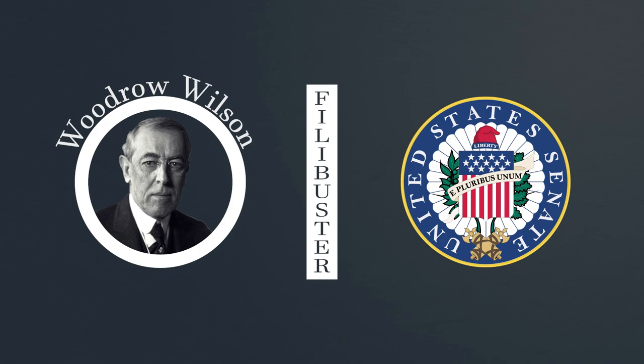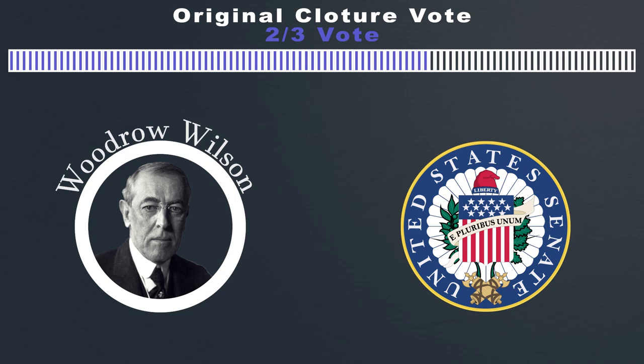Wilson urged the Senate to make a cloture rule, and the Senate did just that. The new rule stated that the Senate can end debate with a two-thirds vote in favor of invoking cloture.